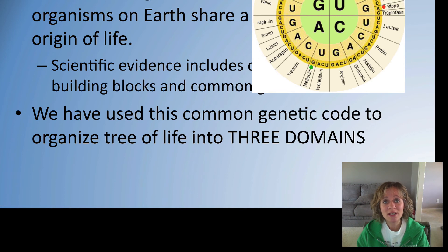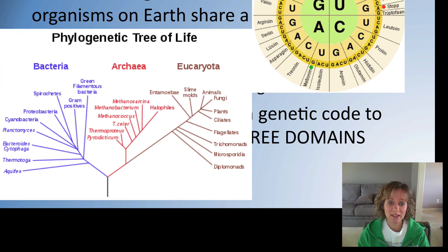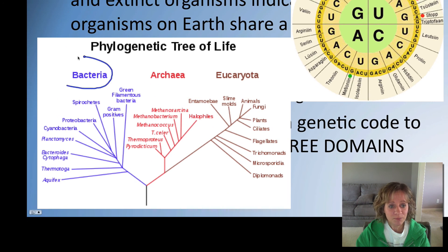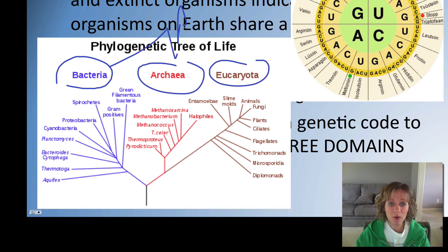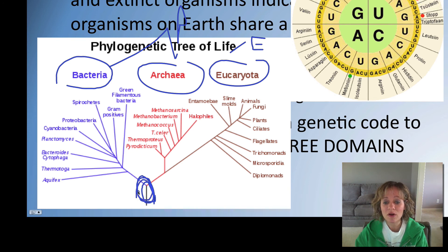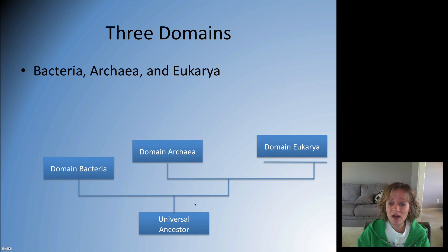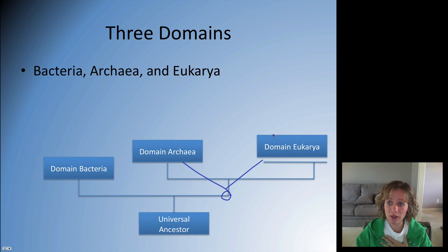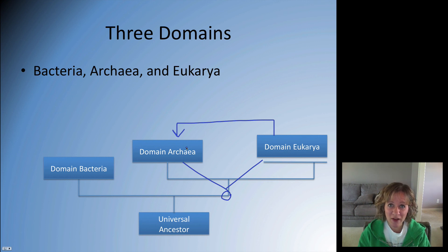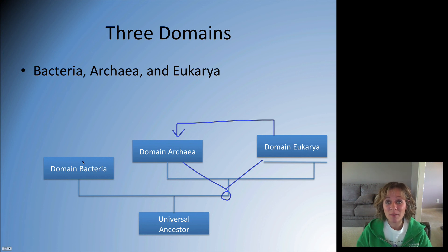Because of all this common information, scientists have organized all of life into a tree of life with three domains: bacteria, archaea, and eukaryotes. Bacteria and archaea are both prokaryotic; eukaryotes are eukaryotic. The common ancestor — the common origin to all of life — is at the base of this tree. A universal ancestor gave rise to bacteria, then split off further into archaea and eukaryotes. Importantly, we eukaryotes are actually more similar to archaea — prokaryotes that live in extreme environments like deep-sea thermal vents and high salt or high heat conditions — than we are to the bacteria that live among us every day.